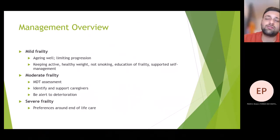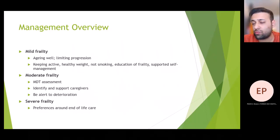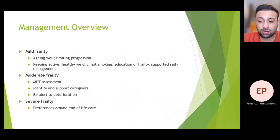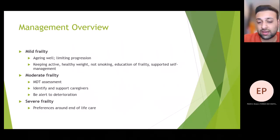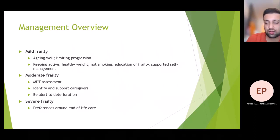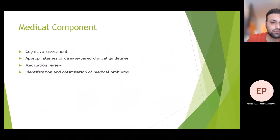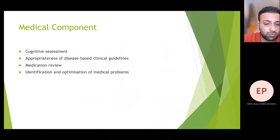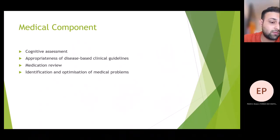For a clinical frailty score of nine, management focuses on end-of-life care and maximising comfort. We do still actively treat, but not to the extent that it causes discomfort — our main preference is comfort over aggressive treatment. The medical component of frailty assessment includes cognitive assessment to rule out dementia, review of disease-based clinical guidelines, medication review, and identification and optimisation of medical problems.